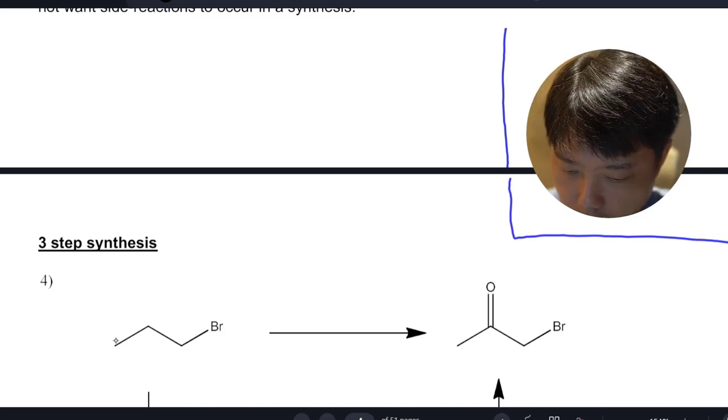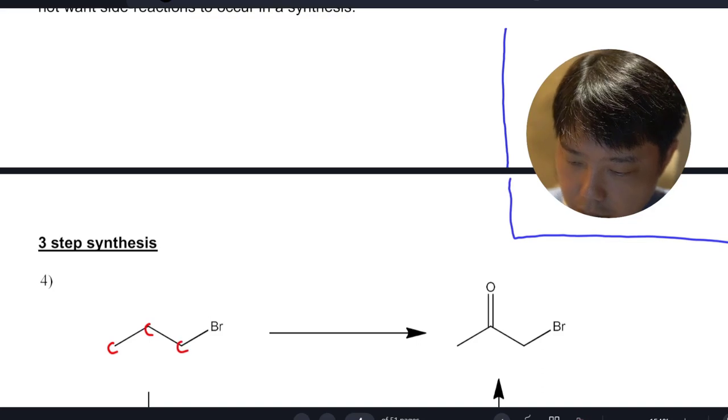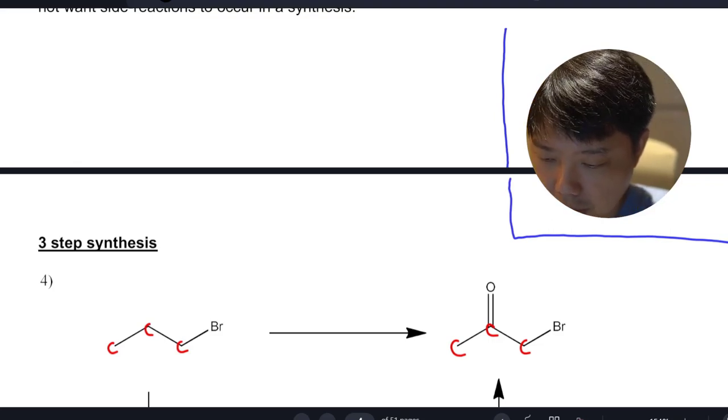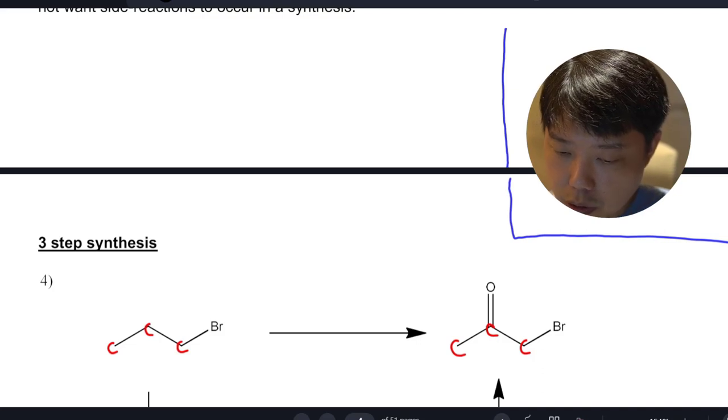The first question is already answered: there is no change in the number of carbons, so we don't need to step up or step down. The next question is, is there a change in the number of functional groups?